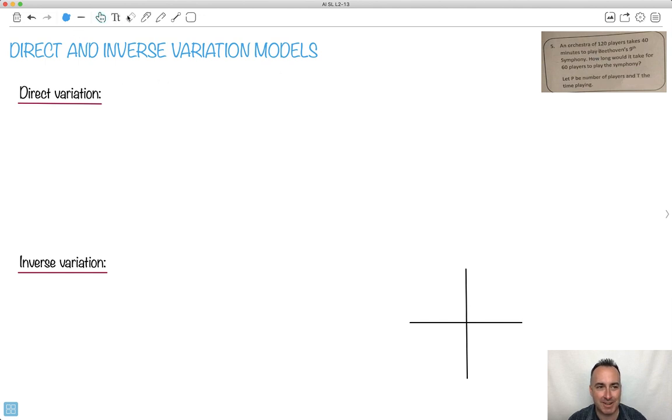So if we have direct variation, what does that mean? Well, that means if we have something like y, if we say it's direct variation, it could be like y is proportional to x. So this symbol right here means proportional to.